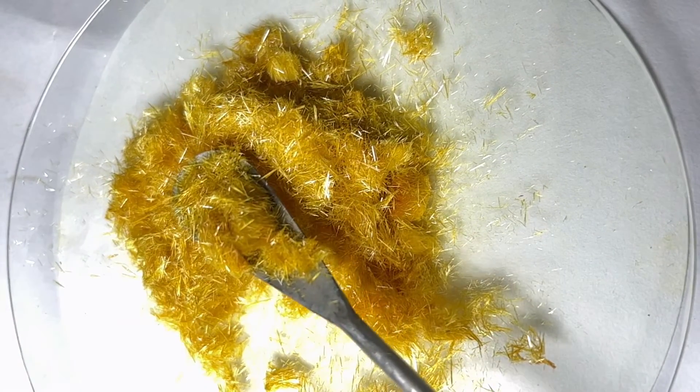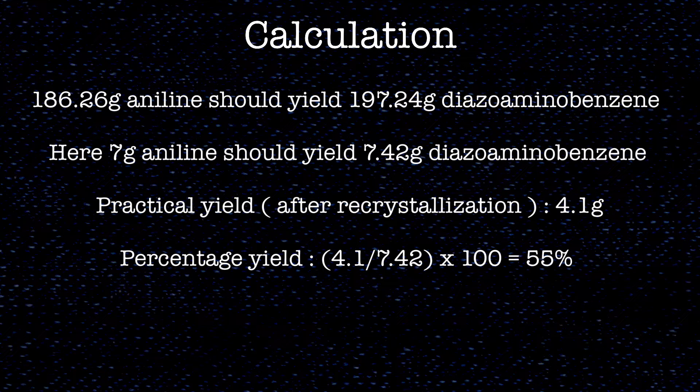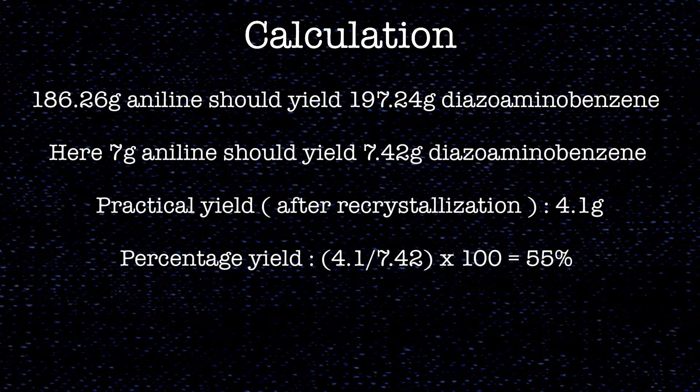Now we will move on with the calculation. Here 186.26 grams of aniline would give 197.24 grams of the diazoaminobenzene. We had used 7 grams of aniline and that would give us 7.42 grams of the diazoaminobenzene, and that is the theoretical yield. The practical yield was 4.1 grams after the recrystallization. The percentage yield is 55%.